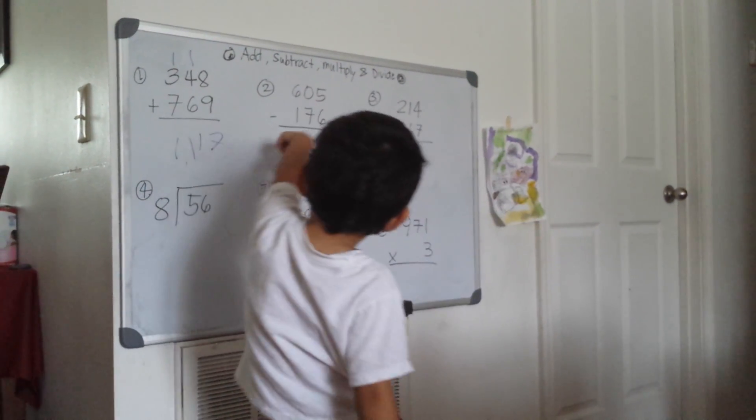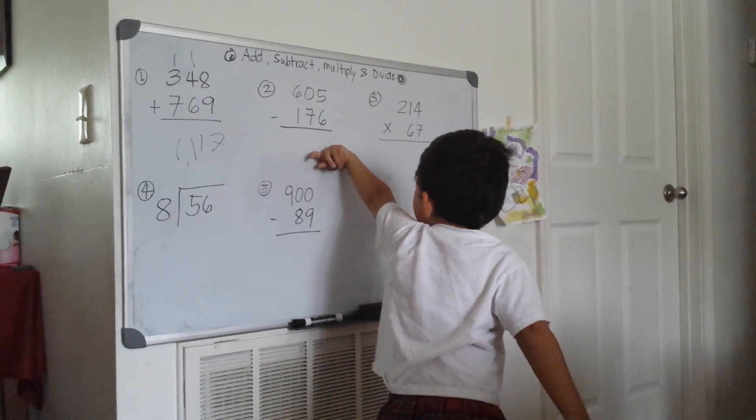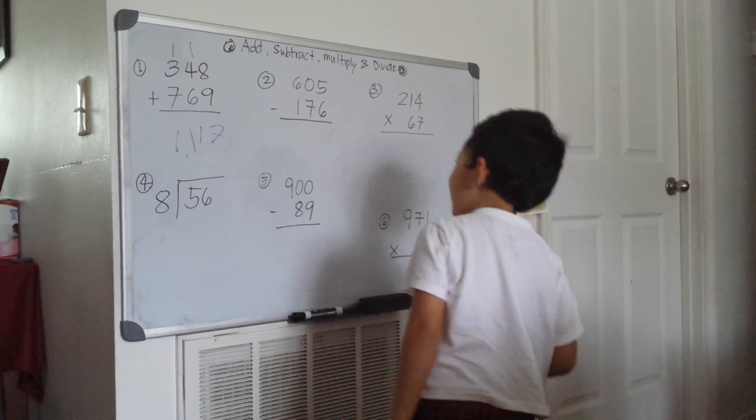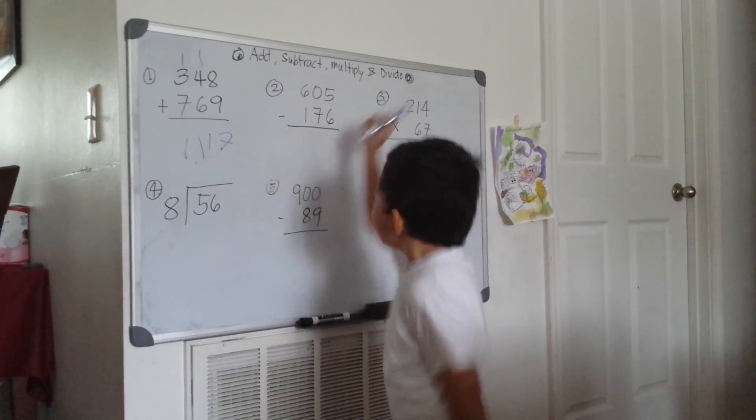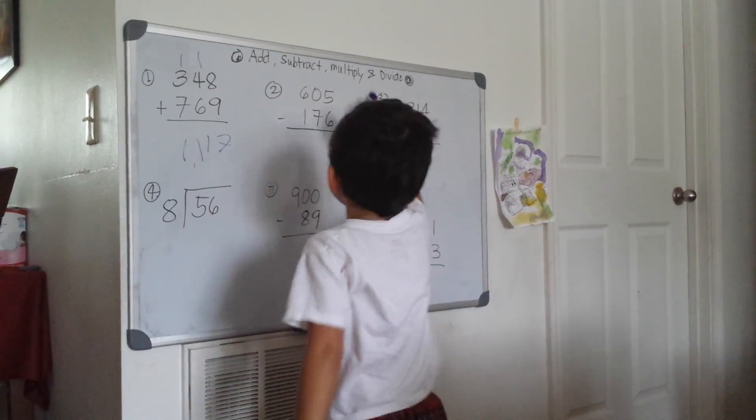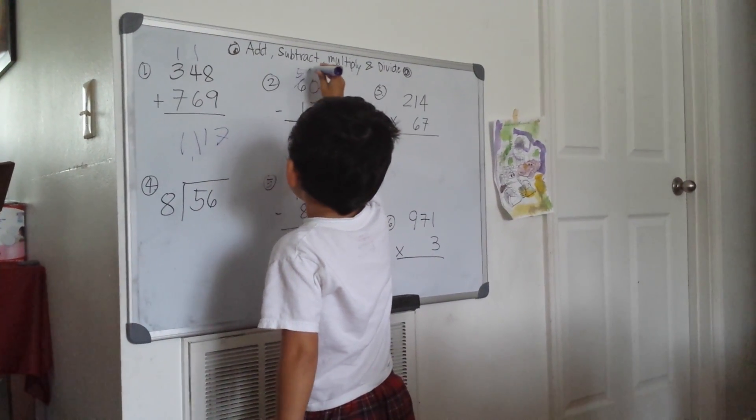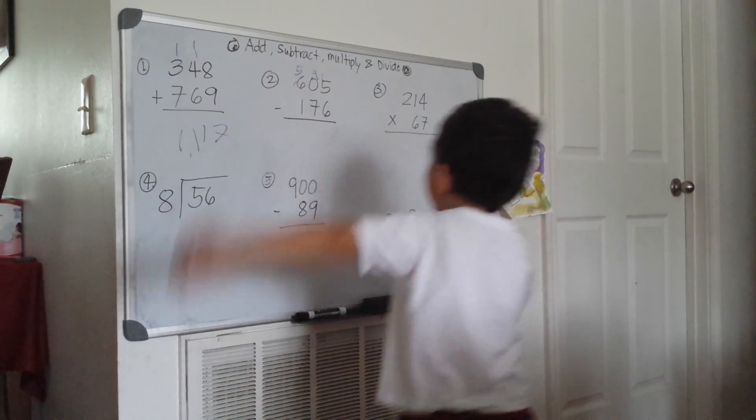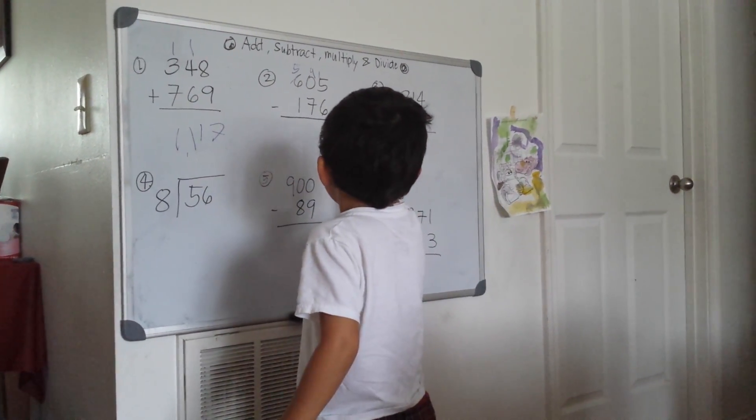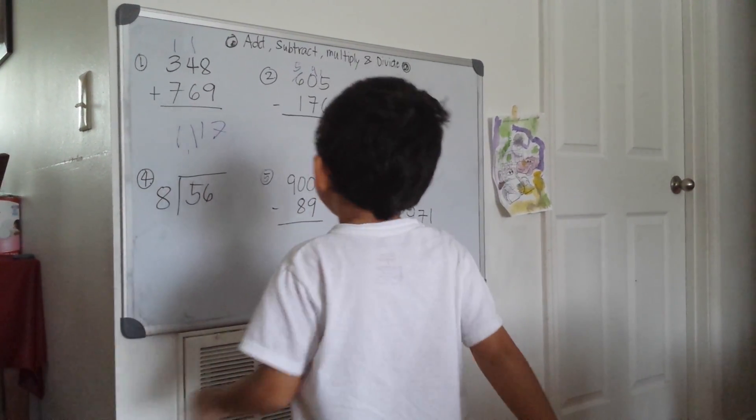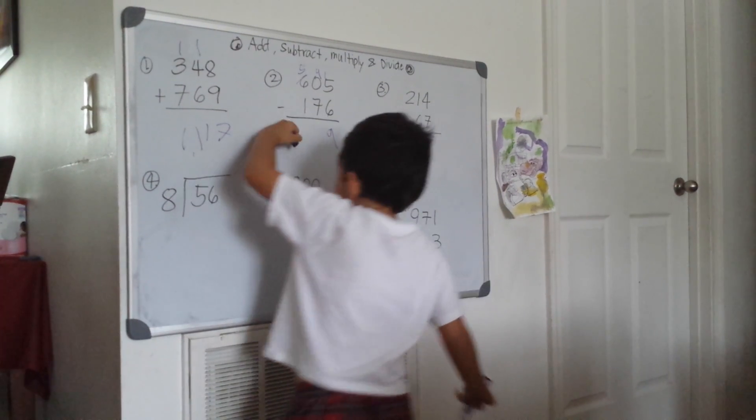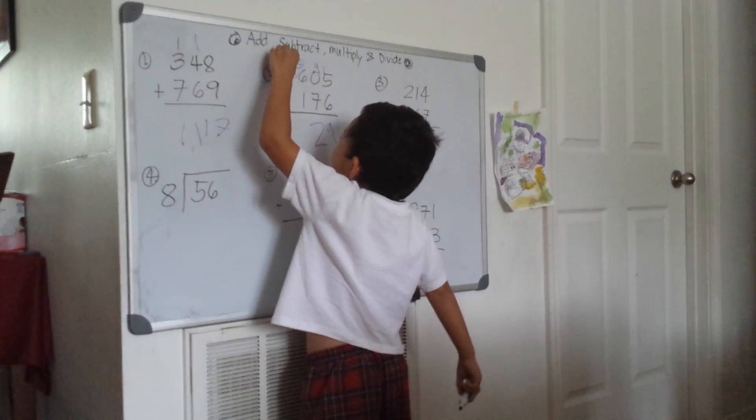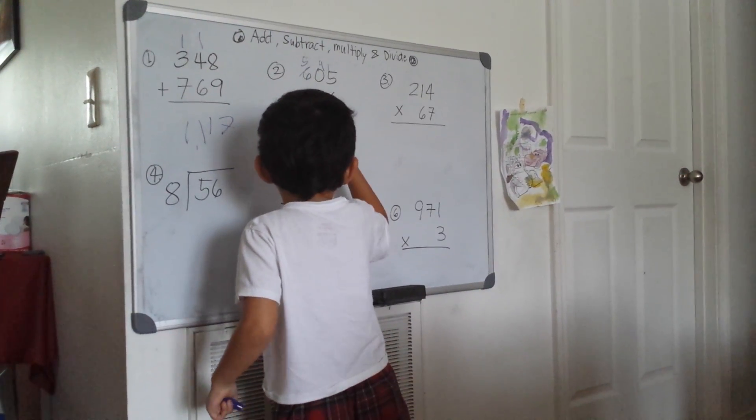605 minus 176. 5 minus 6 cannot be done, so borrow from the 0, which becomes 15. 15 minus 6 is 9. 9 minus 7 is 2, and 5 minus 1 is 4. The answer is 429.